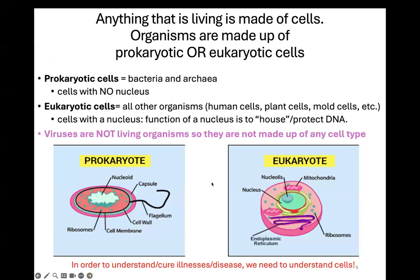All living organisms in the world are made up of cells, and there are only two types of cells in the world. If you're living, you're either made up of a prokaryotic cell or a eukaryotic cell. Bacteria and archaea — archaea is a type of microbe — are made up of prokaryotic cells. And everything else that's living, like human cells, plant cells, mold cells, and protozoa, are made up of eukaryotic cells.